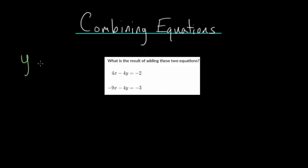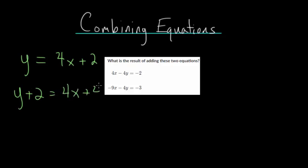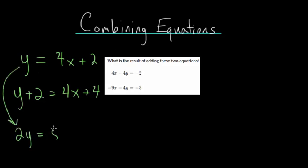We've seen that if we had some type of equation and I wanted to add 2 to everything, as long as I do it to both sides, the equation remains valid because I'm performing the same operation on both sides. I could also multiply everything by 2 — I could have 2y equals 8x plus 4 — and as long as I multiply everything by 2, these are equivalent to each other. So we've seen that before: regular arithmetic to each side of the equation, and as long as it's the same thing, it's okay to do.